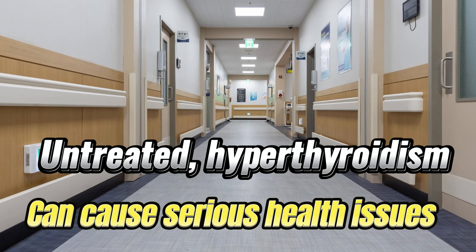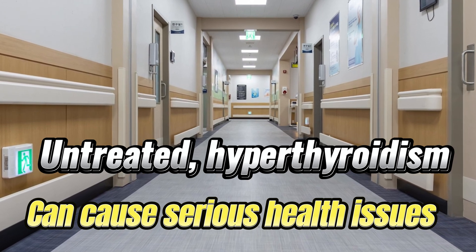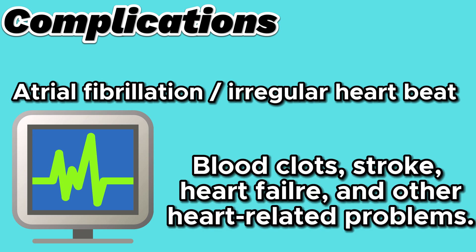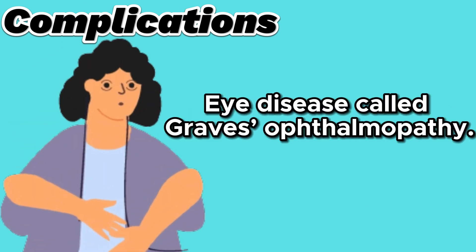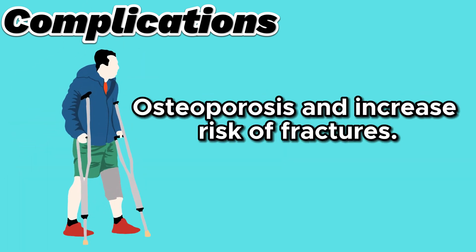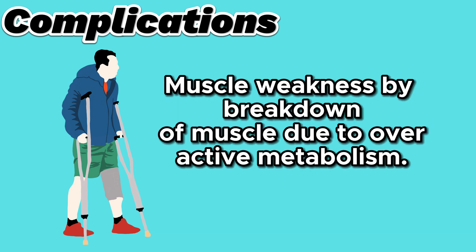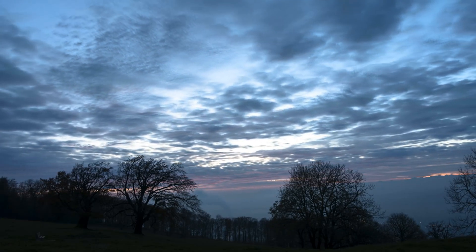If left untreated, hyperthyroidism can cause serious health issues including atrial fibrillation — an irregular heartbeat that can lead to blood clots, stroke, heart failure, and other heart-related problems — an eye disease called Graves' ophthalmopathy, osteoporosis with increased risk of fractures, muscle weakness due to breakdown of muscle from overactive metabolism, and irregular menstrual cycles and fertility issues.